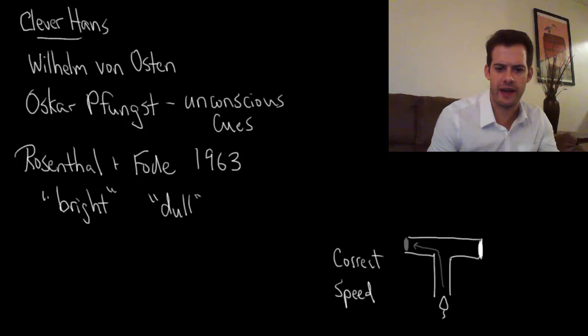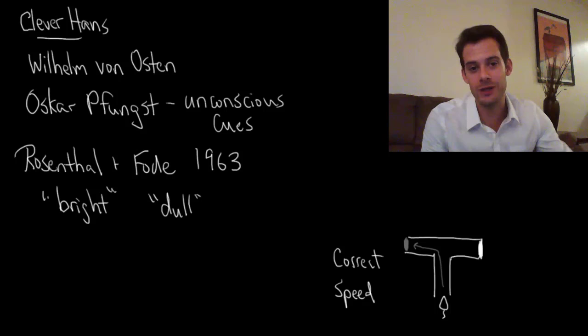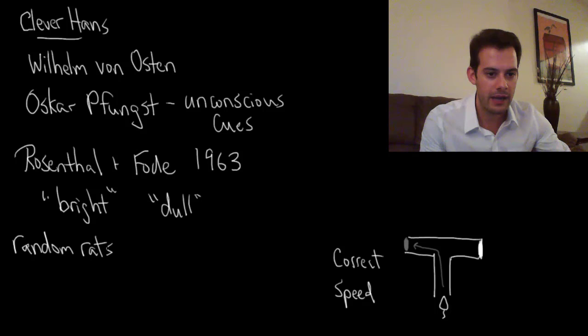And it turns out that students found that the maze bright rats were significantly better in both correct completions and in speed than the maze dull rats. Now this doesn't sound too surprising. But of course, as you might have guessed, there's a twist in this study. And the twist was that there were no maze bright or maze dull rats. In fact, all of the rats came from the same breed and they were randomly divided and given to the students. So instead of bright or dull rats we actually have random rats. And this means that the two groups of students should have gotten basically the same results for all the rats. The correct completions and speed should have averaged out to be about the same between the two groups. So why wasn't it?